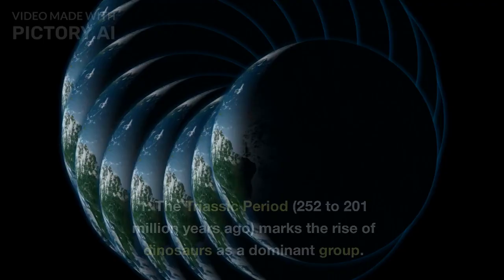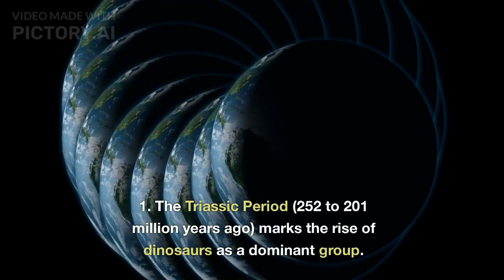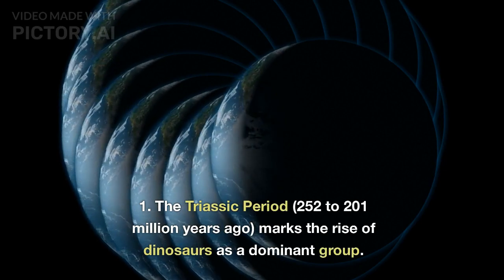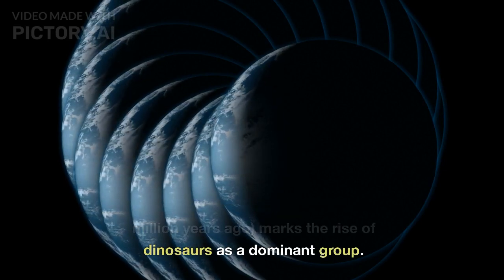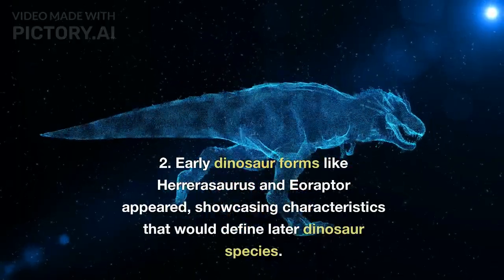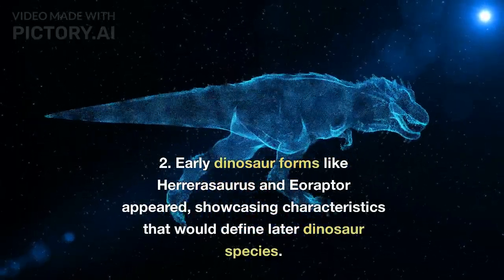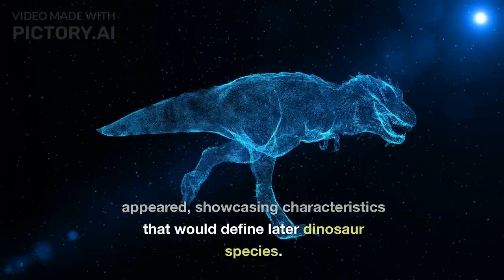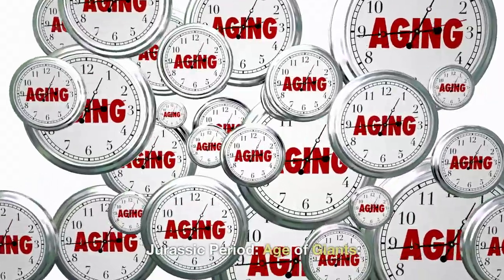Triassic Period: Dawn of Dinosaurs. The Triassic Period, 252–201 million years ago, marks the rise of dinosaurs as a dominant group. Early dinosaur forms like Herrerasaurus and Eoraptor appeared, showcasing characteristics that would define later dinosaur species.